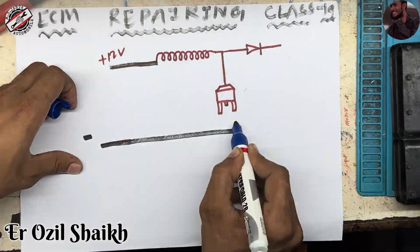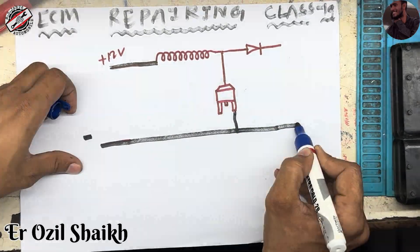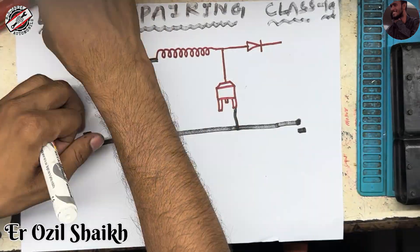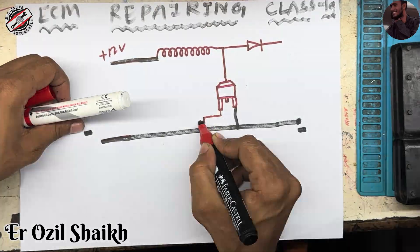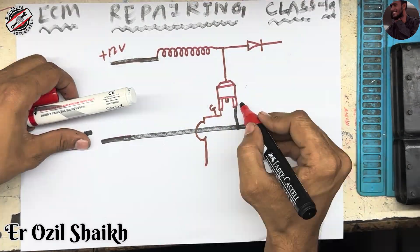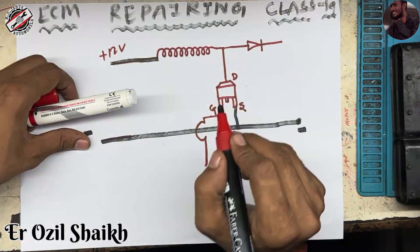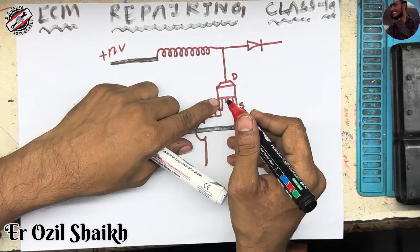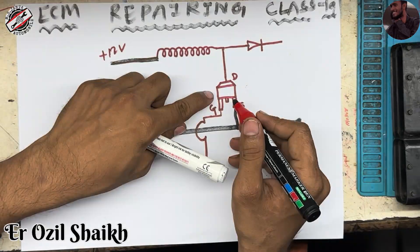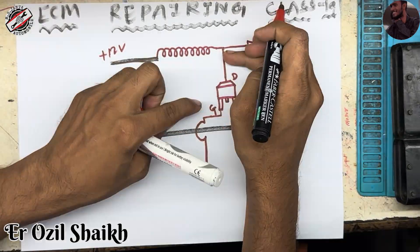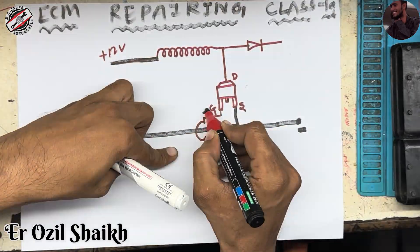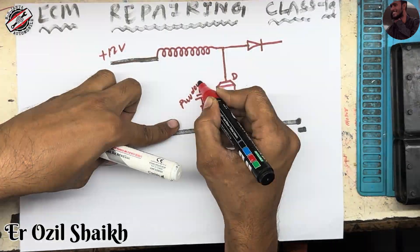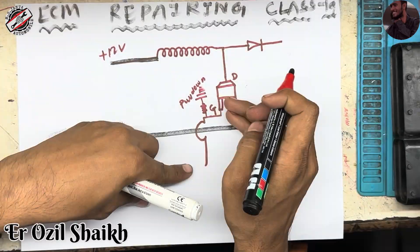This ground is attached here and also here. This is the gate of the MOSFET, this is the source, and this is the drain. When the gate gets a positive voltage, this MOSFET turns on and the ground path is completed. Now we are going to connect one pull-down resistor.